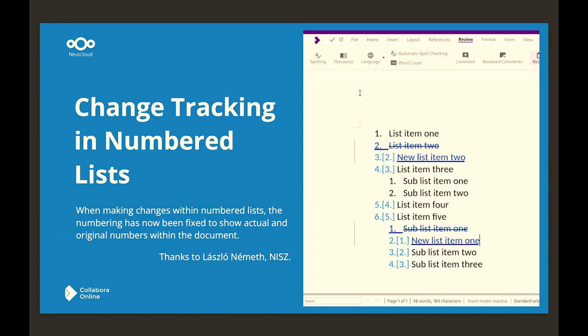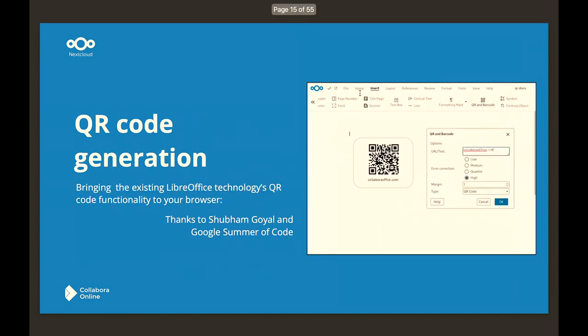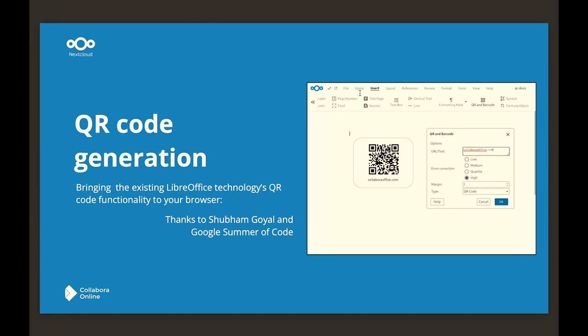We also have change tracking in numbers, so you can see where your changes have gone. Maxim has been working on table style design to make tables prettier and more consistent. And QR code generation — Google has been sponsoring Google Summer of Code for many years, so you can now drop your QR codes in. That's in the latest release coming with Hub 6.